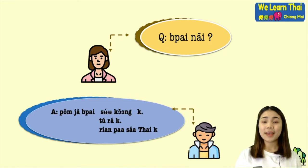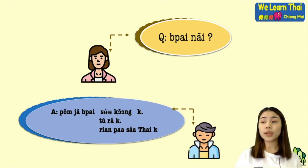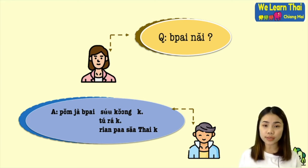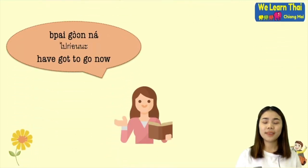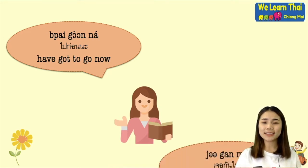The next question is 'by nine,' meaning 'where are you going.' For the answer, you say 'that by sue call krap.' The word 'that' means 'will' — you use it when you will go somewhere or are going somewhere. When you want to say 'I have got to go now,' you can say 'by gone now.'